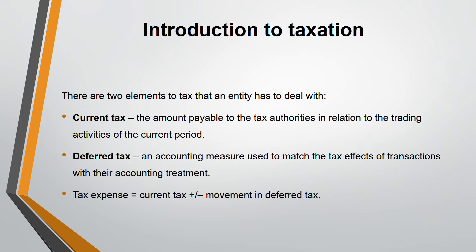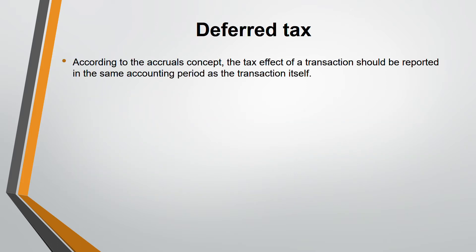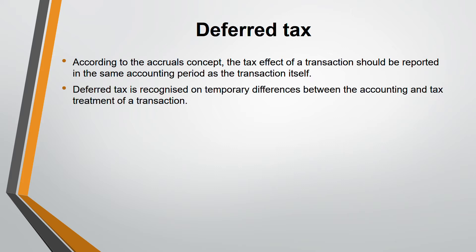In short, tax expense includes two types of tax: current tax and movement in deferred tax — plus or minus depending on whether it is a deferred tax asset or liability. According to the accrual concept, the tax effect of a transaction should be reported in the same accounting period as the transaction itself. However, deferred tax is recognized on temporary differences between the accounting and the tax treatment of a transaction.